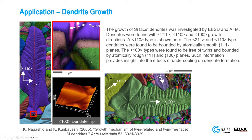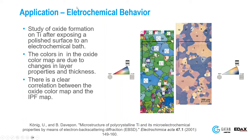You can also correlate EBSD data with various other types of material behavior. In this case, the authors looked at electrochemical behavior as a function of orientation. On the left is an orientation map from EBSD; on the right is a thickness map giving an idea of which grains are oxidizing faster. You can see the correlation between different grains and perform statistical analyses to understand it.